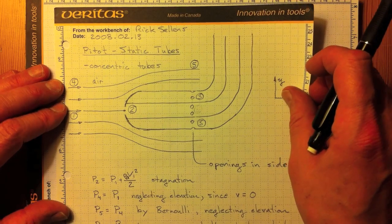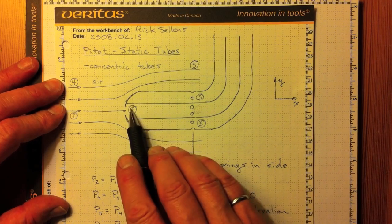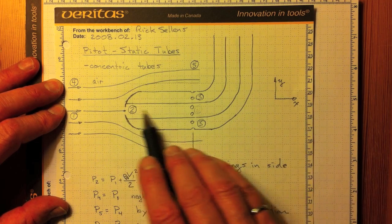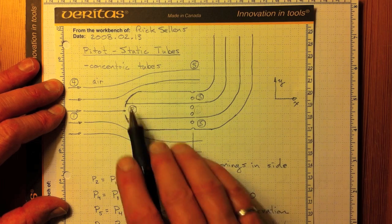A refinement on this idea is the pitot static tube. And the idea is a pitot tube, so location 1, location 2, we can measure the pressure in this central part of the tube, which has got a hole open here at the front.